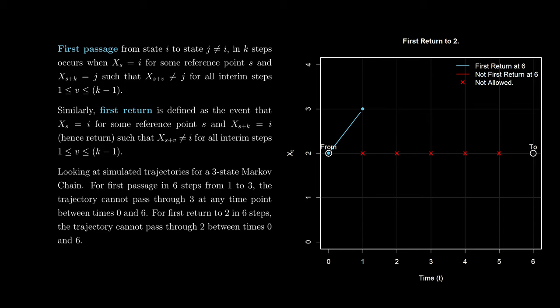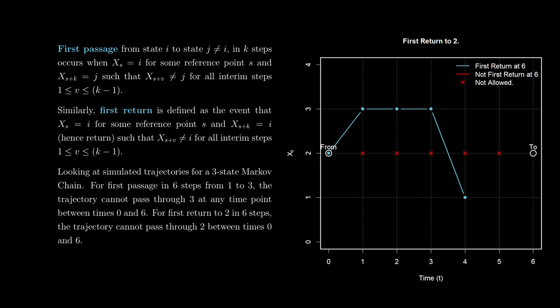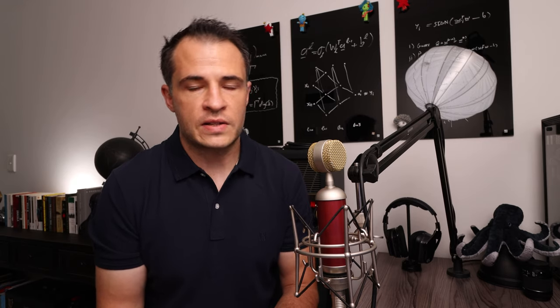Similarly, first-return is defined as the event that the process is in state i at time s, and then k steps later the process is in state i again at time s+k, but such that the process may not assume state i for any of the interim steps between s and s+k. First-passage or return simply concerns subsets of all possible trajectories of the process, subject to the constraint that it transitions or returns to a particular state for the first time.